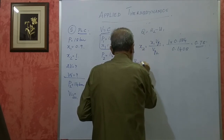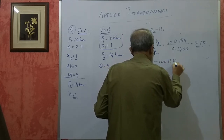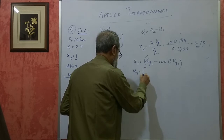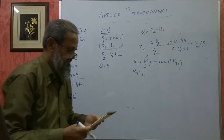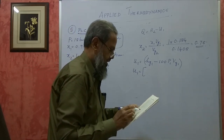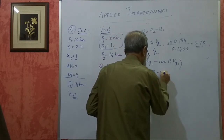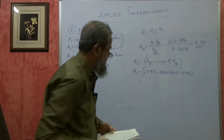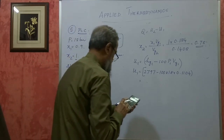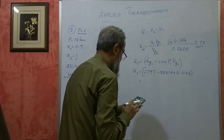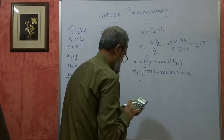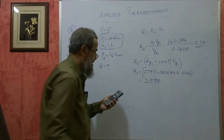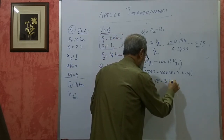U1 = HG1 - 100 · P1 · VG1, because the steam is dry saturated at state 1. For 18 bar, HG1 = 2797. So U1 = 2797 - 100 × 18 × 0.1104 = 2598.3 kJ/kg.